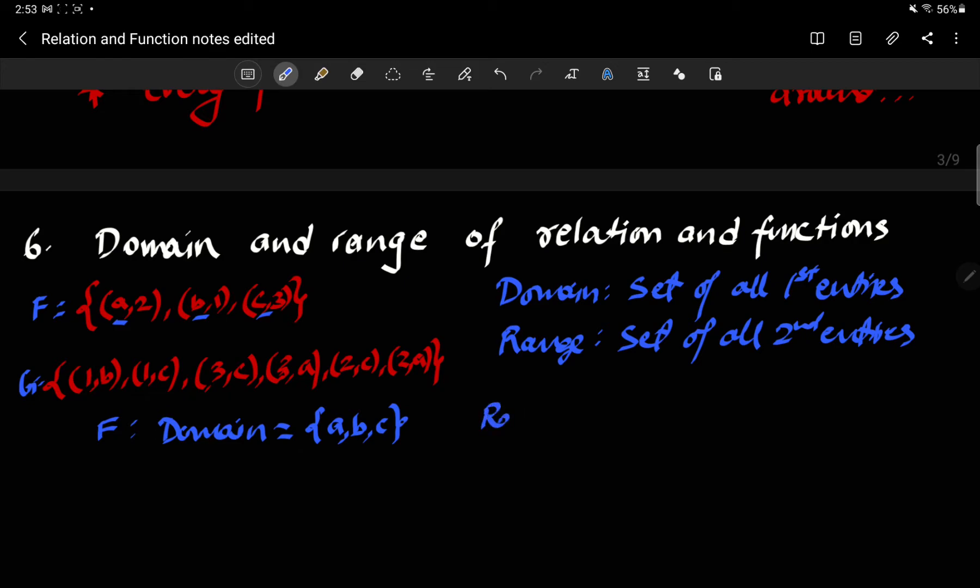The range is the second one, which is two, one, three. In case of g, the domain is one, three, two. Now we're not going to list one two times because it's a set, it's a collection, so the copies of objects are not considered to be distinct. And the range here is going to be a, b, and c.